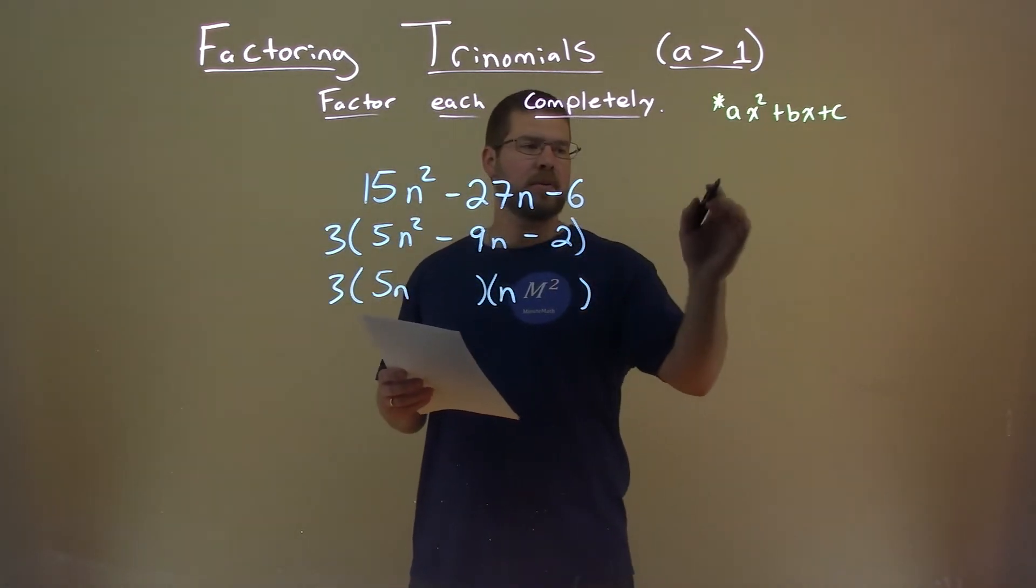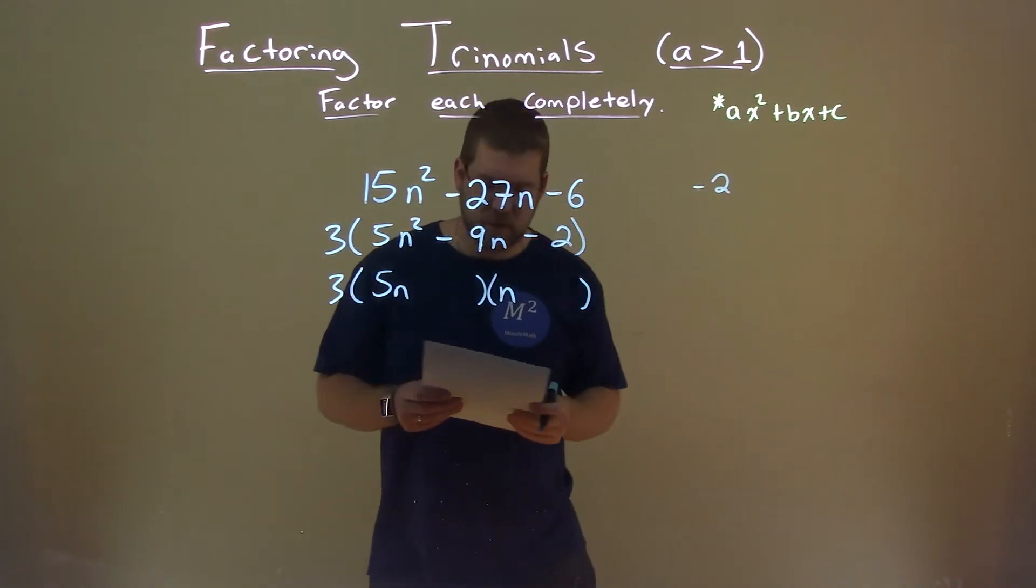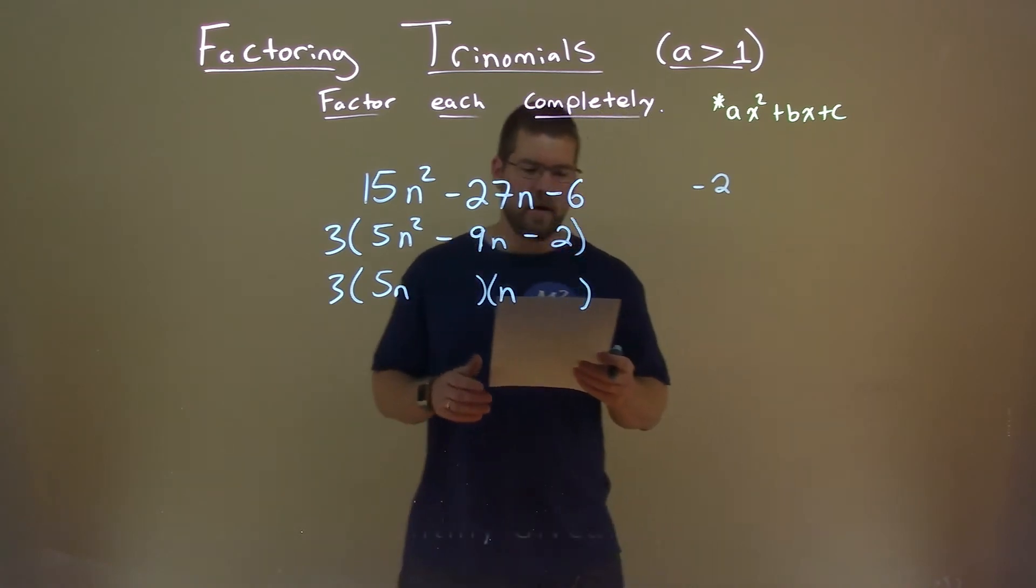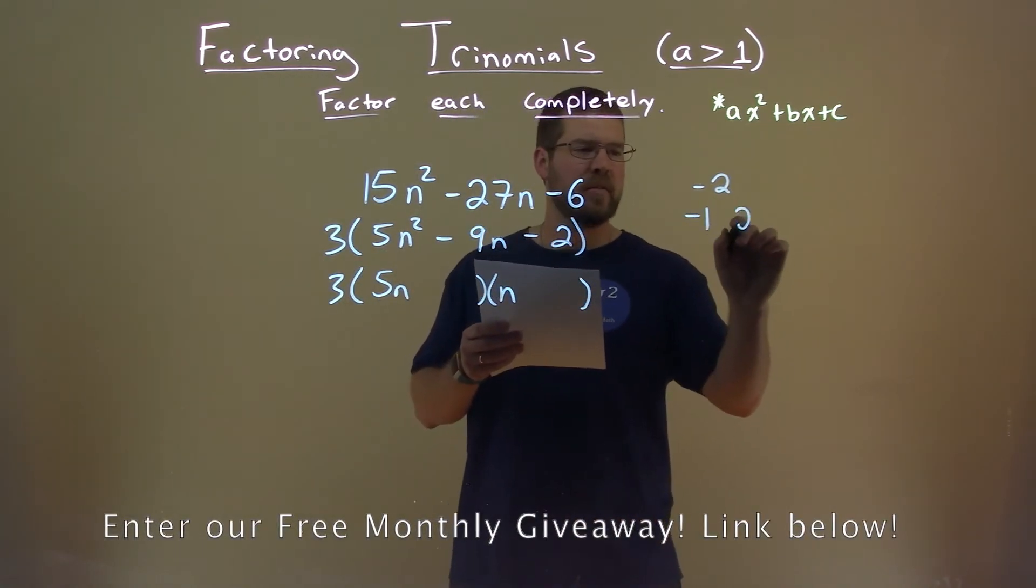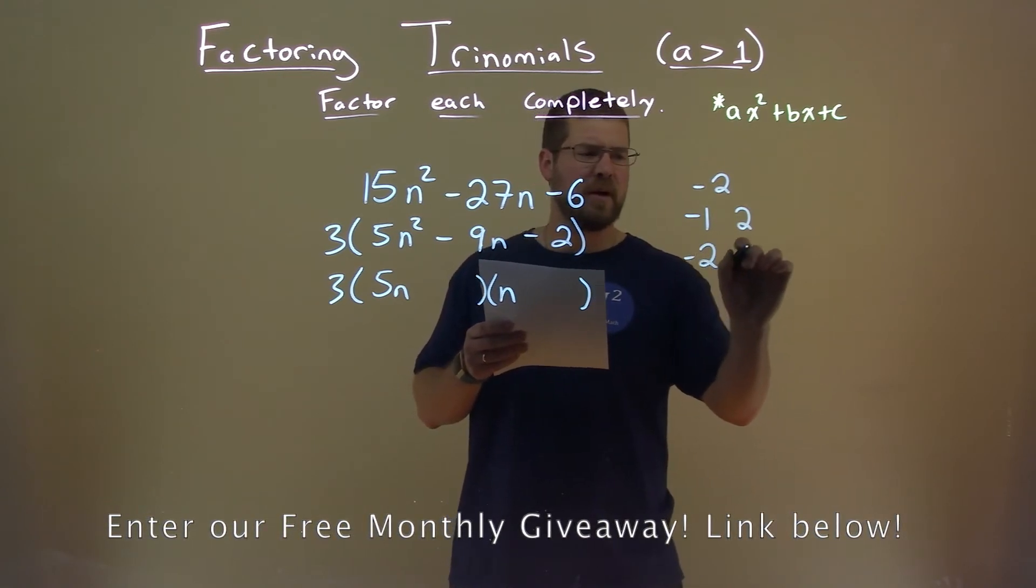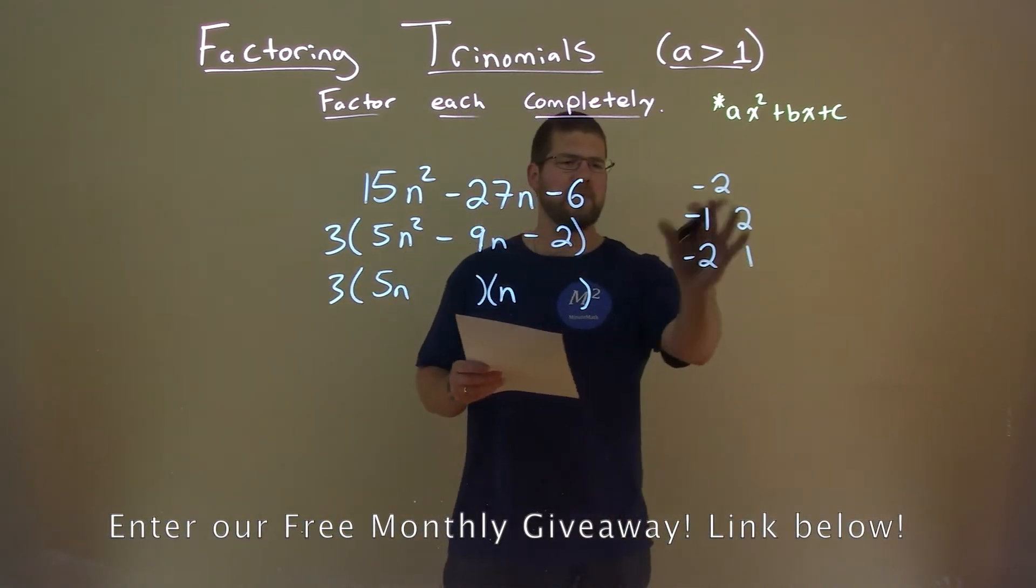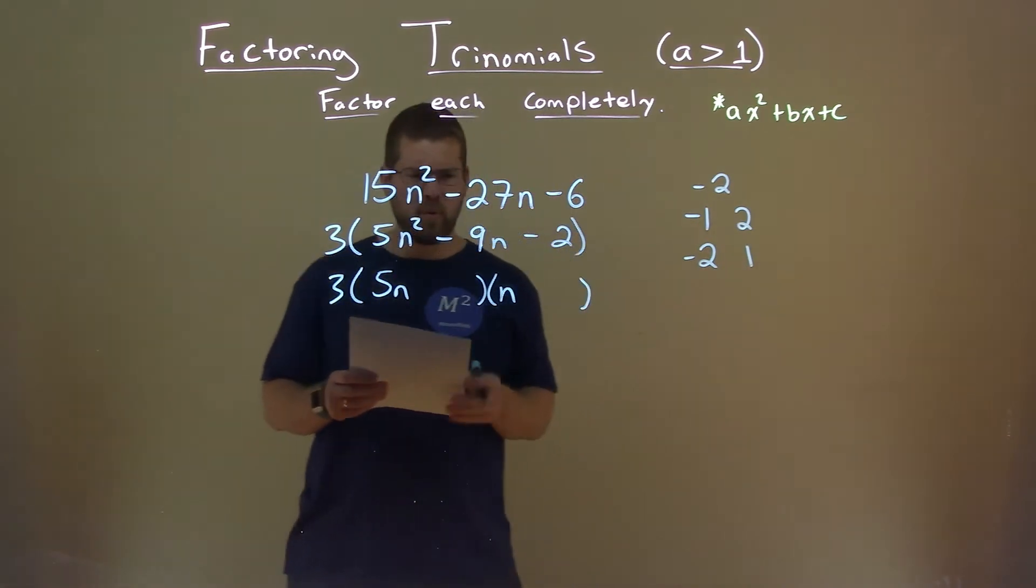And then now let's look at the c value, which is a negative 2. What two numbers multiply by negative 2? Well, that's going to be a negative 1 and a positive 2, or a negative 2 and a positive 1.